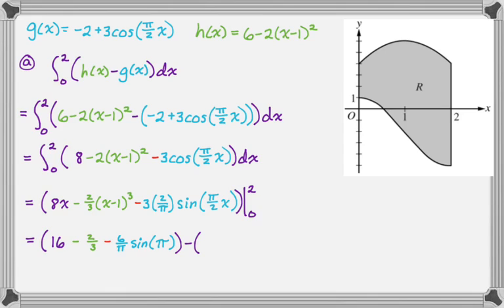And then minus, we got to substitute zero. So eight times zero is zero. When you plug in zero to this next term, we get zero minus one is negative one. Negative one cubed is negative one. So negative one times negative two thirds is plus two thirds. And then when we plug in zero here, we're going to get minus six over pi and the sine of zero.